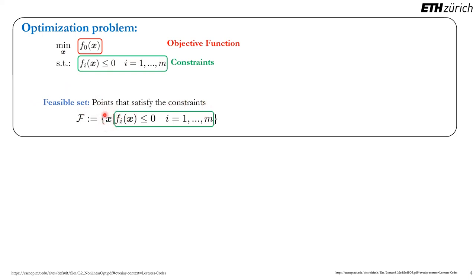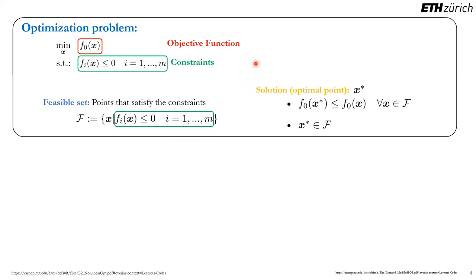With these constraints, we can define what the feasible set is — the set of points that satisfy all the constraints, i.e., the set of points x such that f sub i of x is less or equal than 0 for all the constraints. With these definitions, we can define the optimal point, which is a point x star that belongs to the feasible set and achieves an objective value less or equal than all other points in the feasible set.